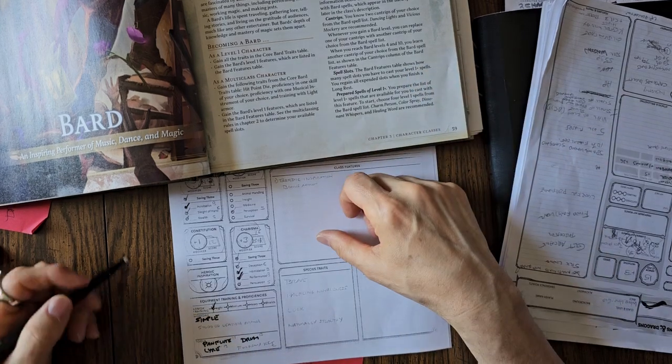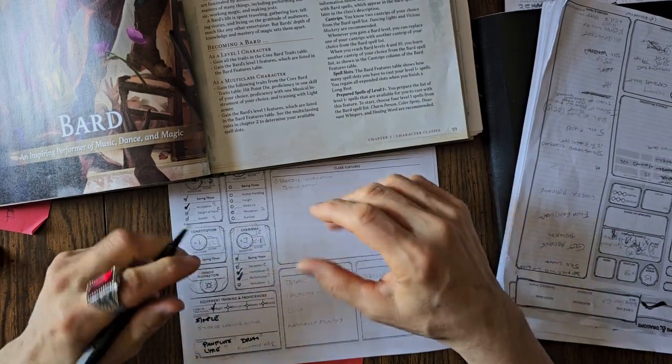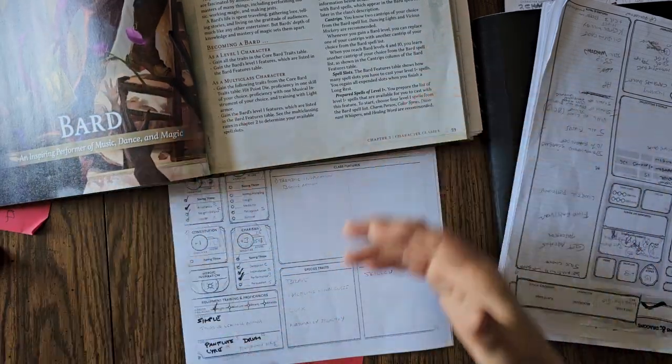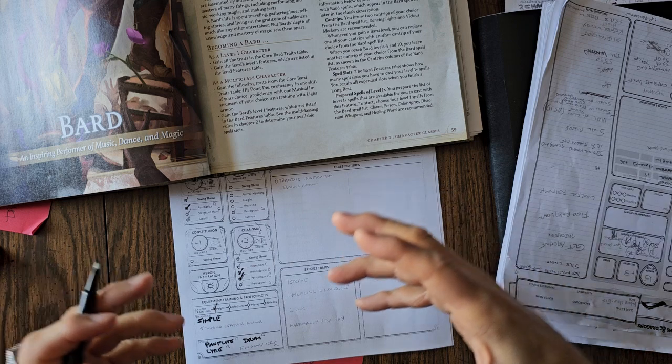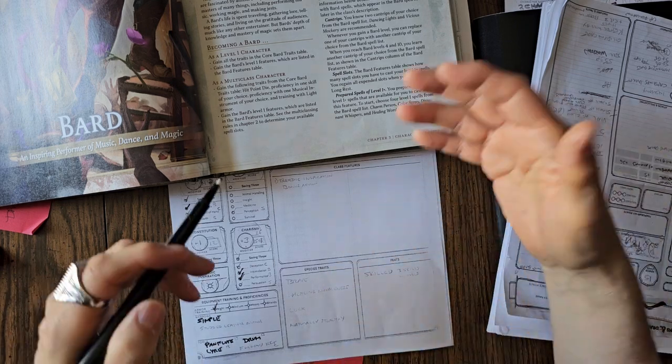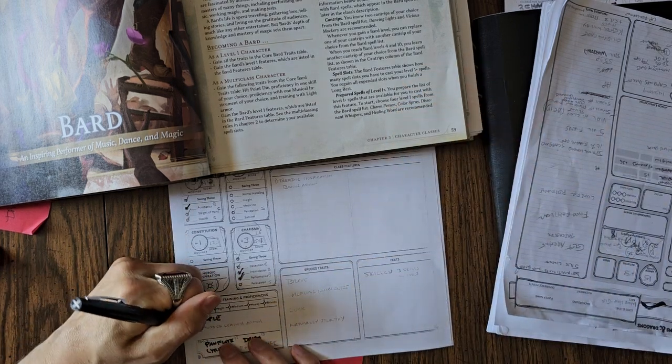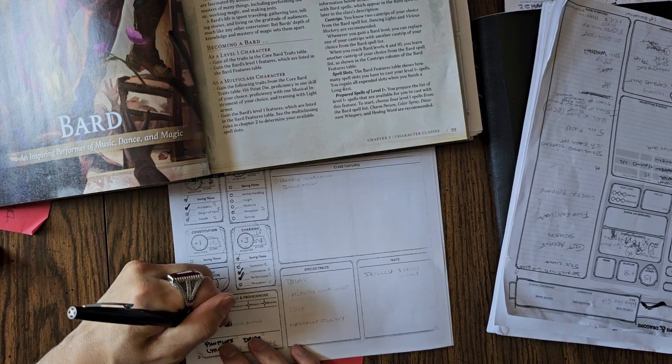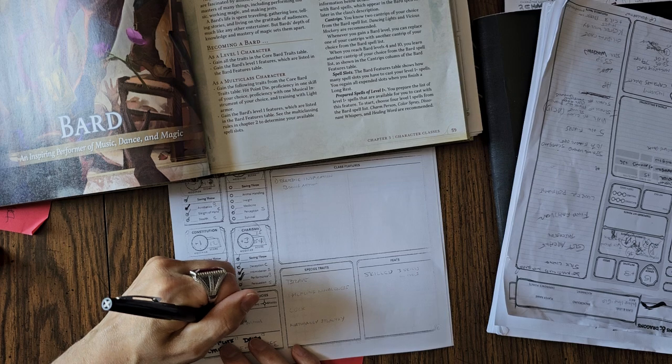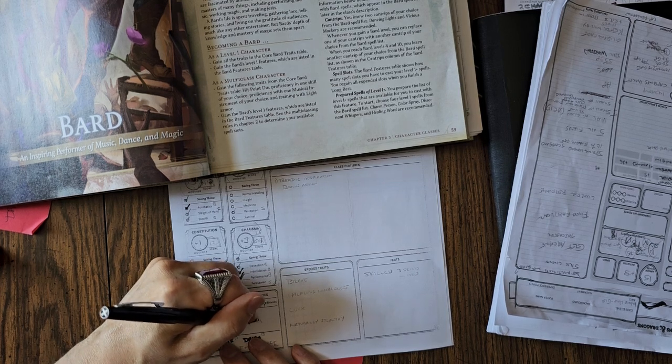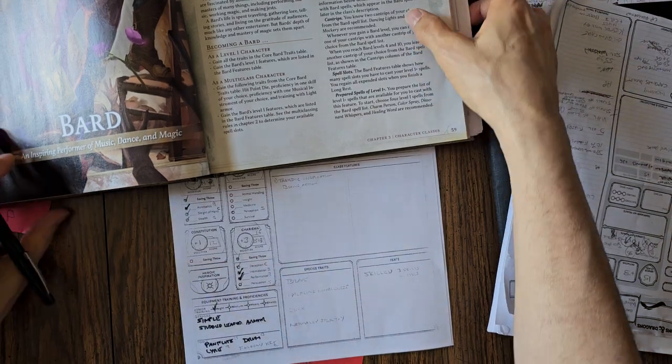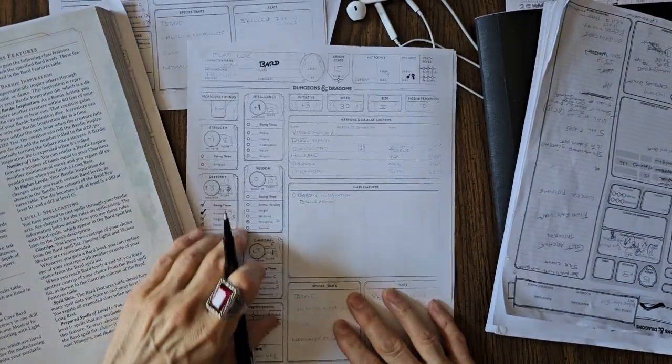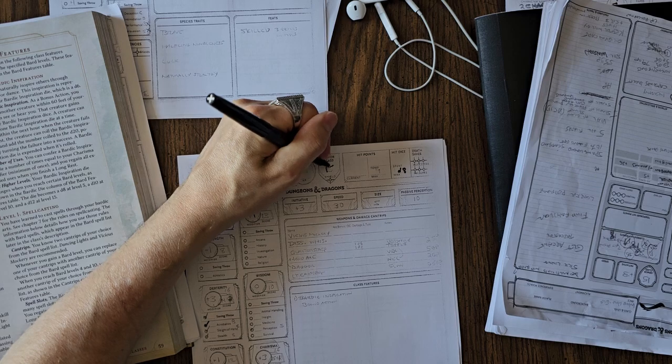He also has light armor training. So I started him off on level one with studded leather armor. But as we level this guy up in subsequent videos, once you get to level three, we don't need the studded leather armor anymore because of a property that we have as a level three Dance Bard. Studded leather armor will give us an armor class of 15, which is nice.